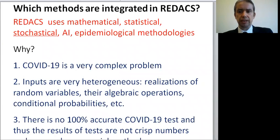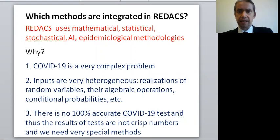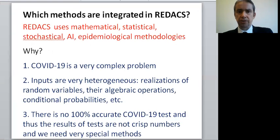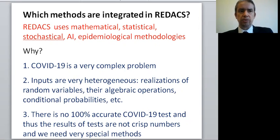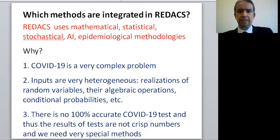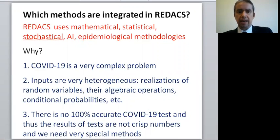From a methodological point of view, Redux is a large construction because it combines mathematical, statistical, stochastic, artificial intelligence, and epidemiological methodologies in a harmonious way. The reason so many methodologies must be combined to manage COVID-19 is simple: COVID-19 and its active control and management is a very complex problem, as we have seen throughout 2020 and into this year. The fight, especially within medical services, has been dramatic and requires highly capable methods to achieve more stabilized situations.